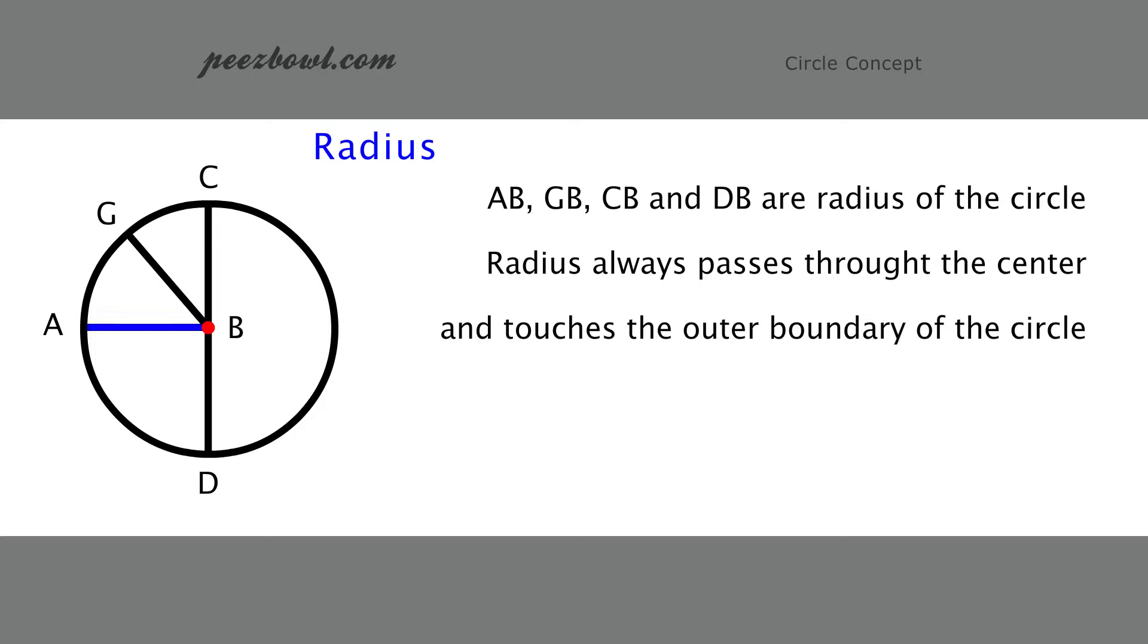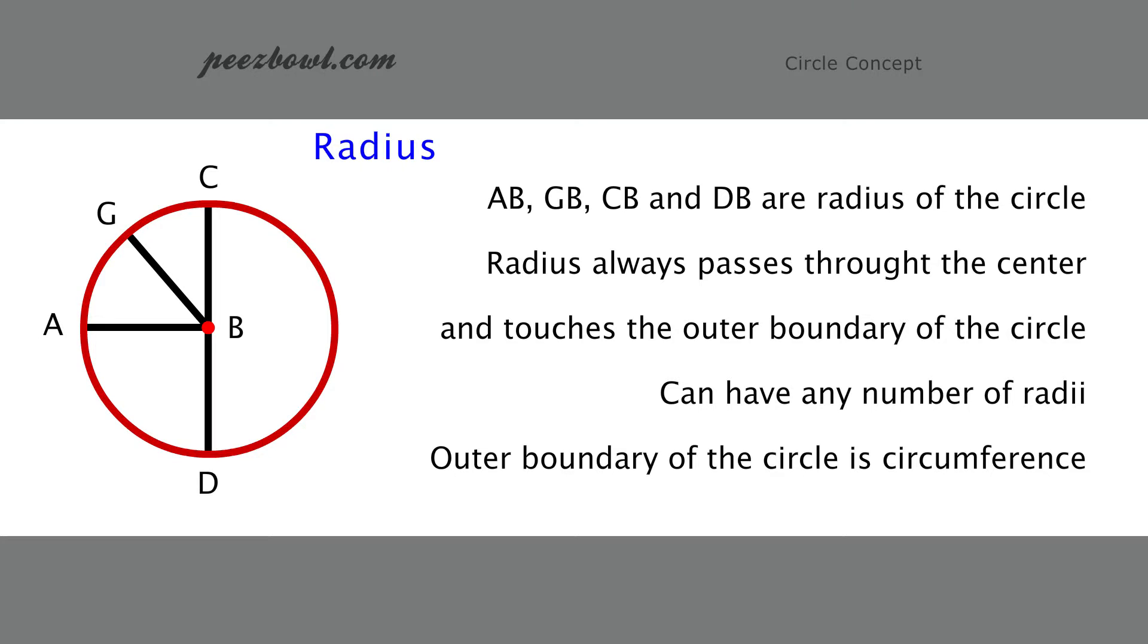Look closely, all these radii are connected through center of the circle, which is B. There could be any number of radii in a circle. The outer boundary of the circle is called circumference of the circle.